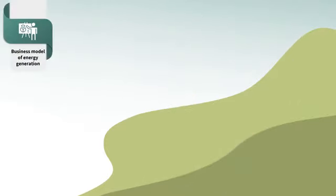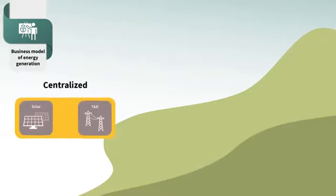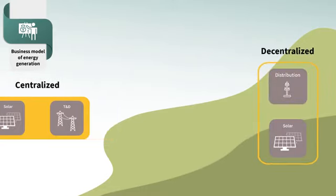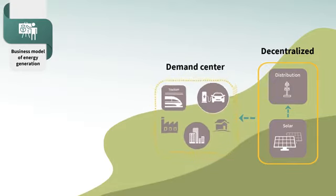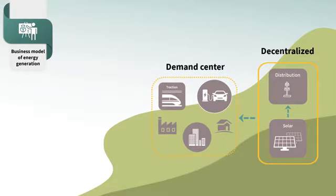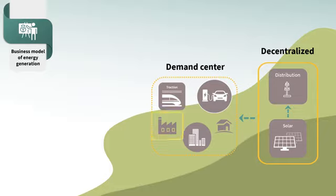Let's start with some quick notes on the business model of energy generation. Energy generation can be classified as centralized and decentralized. Decentralized energy generation produces energy close to the load center. In a residential application, for instance, solar energy is generated right above the roof of the resident. The energy produced in this case is lower than 5 megawatt. Besides residential applications, commercial applications are also another typical example of decentralized power generation.